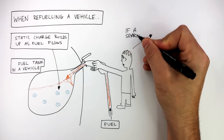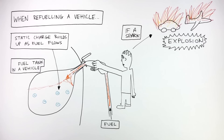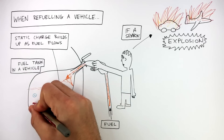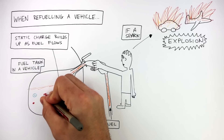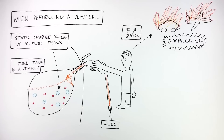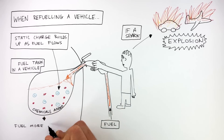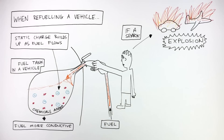If there's a spark, this poses the risk of an explosion — the vehicle can explode, and this is very dangerous. To prevent an explosion, chemicals can be added to the fuel. This makes the fuel more conductive, so less static charge builds up.